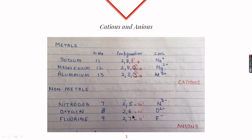Nonmetals like nitrogen become stable by gaining three electrons to follow the octet rule and form an N³⁻ ion. Similarly, oxygen gains two electrons to form an O²⁻ ion, and fluorine gains one electron to form an F⁻ ion and become stable.